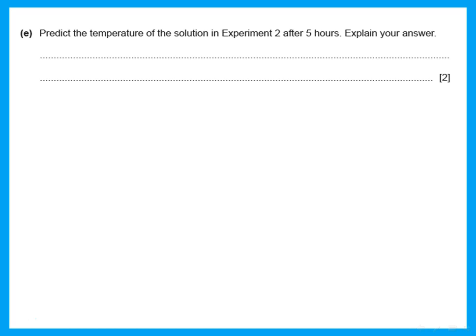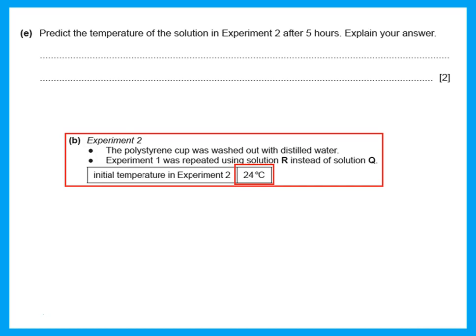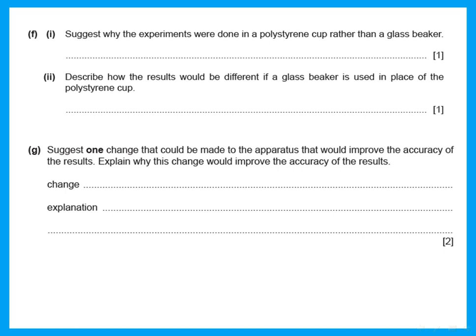Predict the temperature of the solution in experiment two after five hours. After the experiment finishes, the temperature will go back to the initial room temperature. Here the temperature will go back to 24°C because the reaction is finished and the temperature returns to what it originally was — the room temperature. He also asks why the experiments were done in a polystyrene cup rather than a glass beaker: polystyrene is an insulator, so there will be less loss of heat to the surroundings.